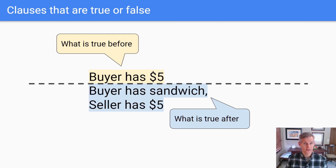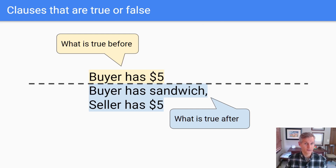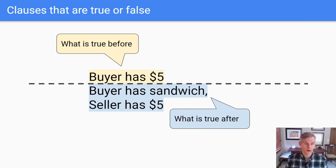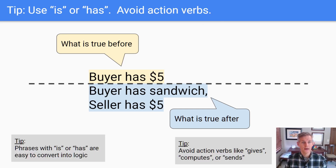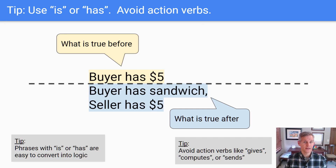In this case: does the buyer have $5 or not? Does the seller have $5 or not? And does the buyer have a sandwich or not? Here's a tip: to keep thinking logically instead of procedurally, try using the verbs 'is' and 'has' when you phrase your contracts. This works most of the time, and it's easy to convert that to logic.